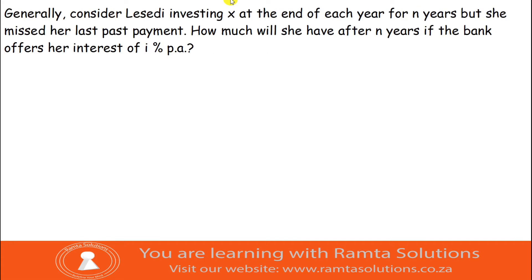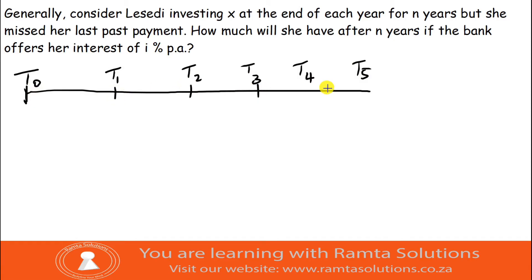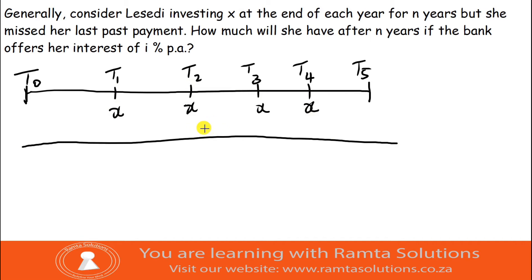Now let's look at the general case. Cindy is investing x rands at the end of each year for n years, but she missed her last payment. How much will she have after n years if the bank offers interest of i percent? The timeline goes t-naught to t-n. She doesn't deposit at t-naught; deposits occur at the end of each year — at t1, t2, t3, up to t(n-1) — not at the final time period.